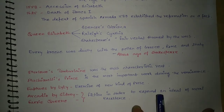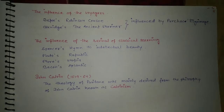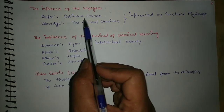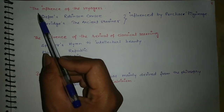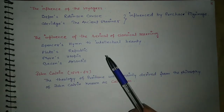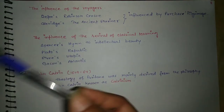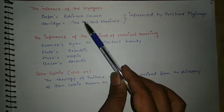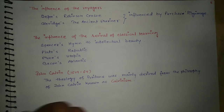There were some important influences on literature that we must know to understand the age completely. If you are reading Defoe's Robinson Crusoe or Coleridge's The Rime of the Ancient Mariner, you will see the great influence of voyages on the works of writers of that time. People were going on voyages and bringing different kinds of knowledge into English literature. Both Robinson Crusoe and The Ancient Mariner were influenced by Purchas His Pilgrimage.